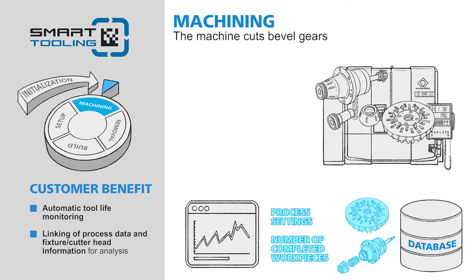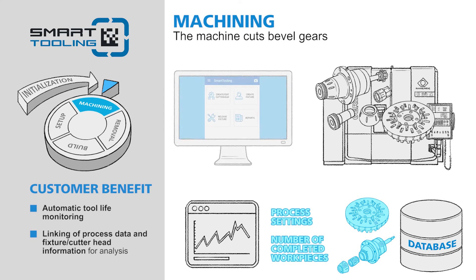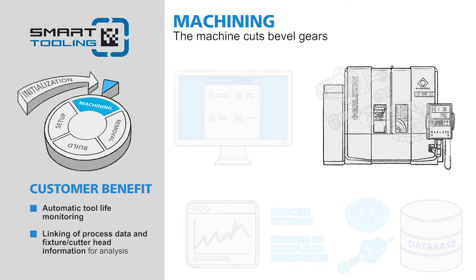Replacement part procurement can be planned before wear parts fail. You can use the digital information to obtain an overview of the condition of any items of your production equipment anytime, anywhere. Smart Tooling will help you manage your tools efficiently.